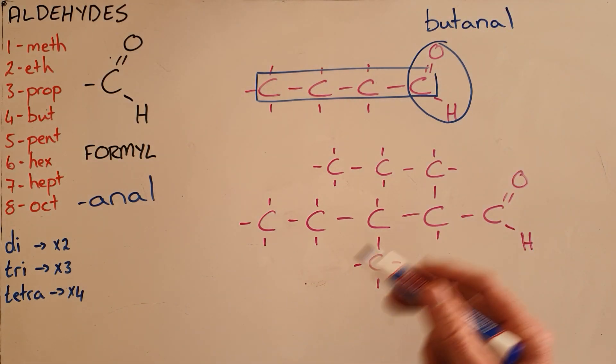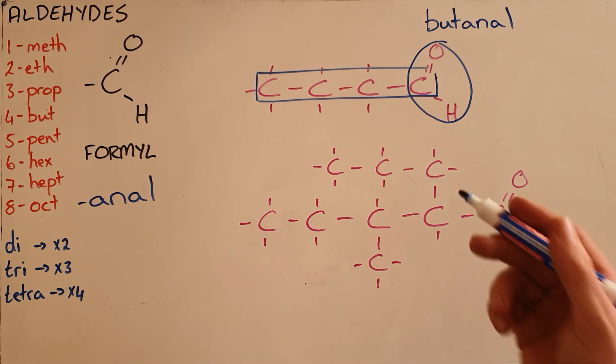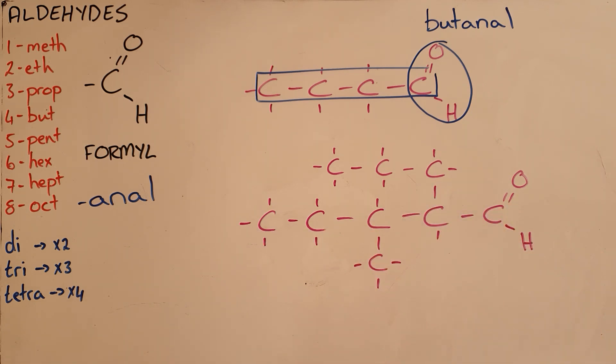It is unnecessary to call it butan-1-al because aldehydes with a formyl group are always on the first carbon.